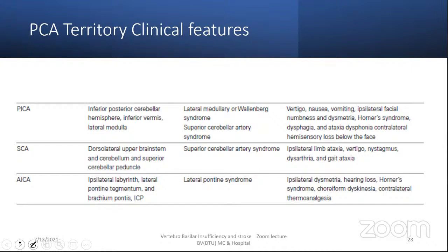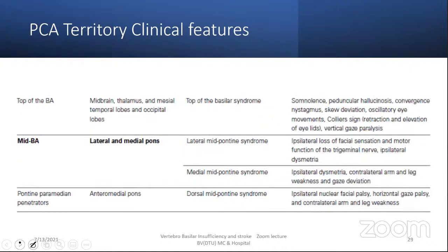The top of the basilar artery syndrome affects the midbrain, thalamus, mesial temporal lobes, and occipital lobes — a very serious condition. Features include coma, somnolence, peduncular hallucinations, convergence nystagmus, skew deviation, oscillatory eye movements (retraction and elevation of the eyelids — Collier's sign), and vertical gaze paralysis. The mid-basilar artery territory involves lateral and medial pontine areas: lateral mid-pontine syndrome causes ipsilateral loss of facial sensation and motor function of the trigeminal nerve, and ipsilateral dysmetria.